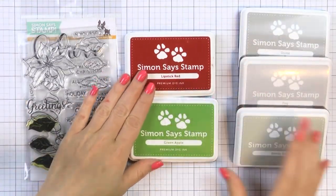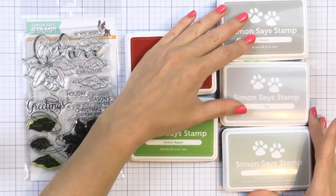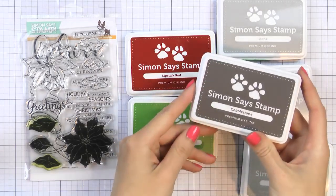For my ink colors I have Lipstick Red and Green Apple along with several shades of grey: Stone, Fog, Barely Beige, and Cobblestone.